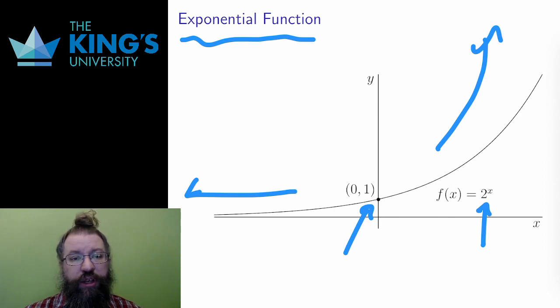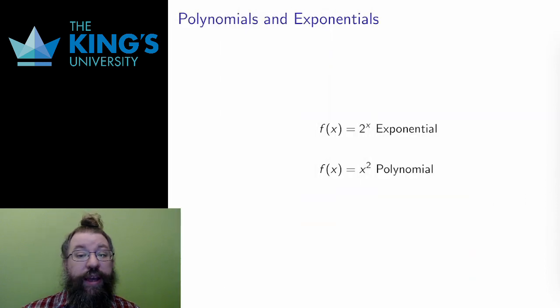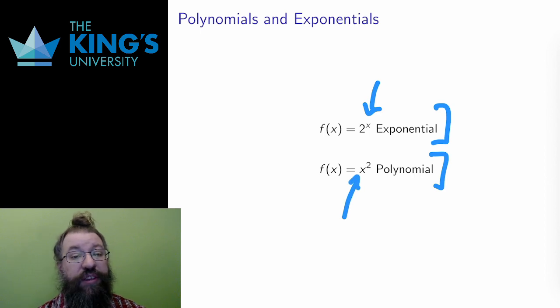It is worth pointing out a very common confusion here between exponentials and polynomials. Here are two very similar functions. Both have a constant 2, both have a variable x, and both have an exponent. The first is an exponential function because the variable is in the exponent. It is not algebraic. It is not polynomial. It is something quite different. The second is a quadratic, a polynomial, because the variable is in the base. Mixing up these two is a very common mistake, and I encourage you to pay careful attention to make sure you avoid that pitfall.